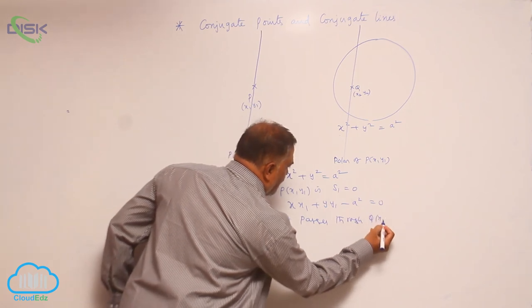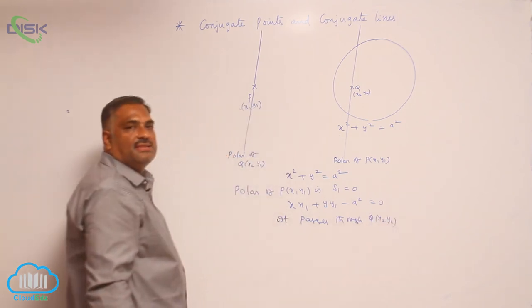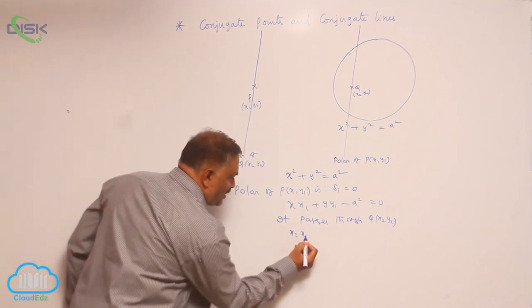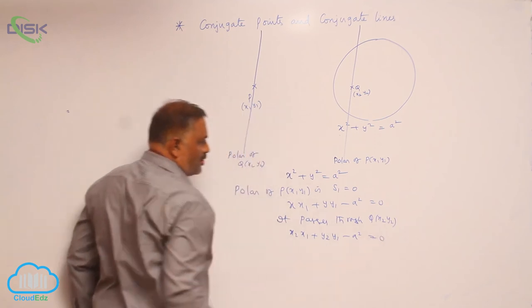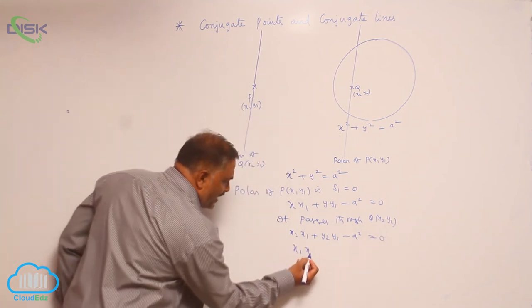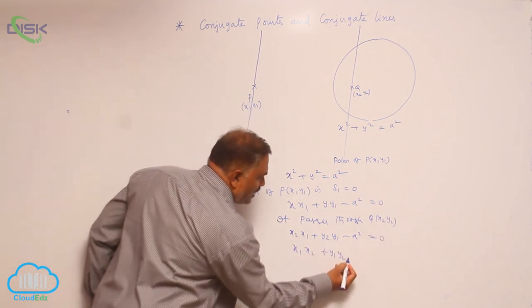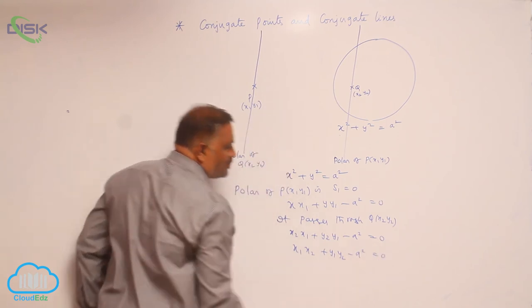Then, wherever x comma y is there, substitute x2 x1 plus y2 y1 minus a square equal to 0 or x1 x2 plus y1 y2 minus a square equal to 0.